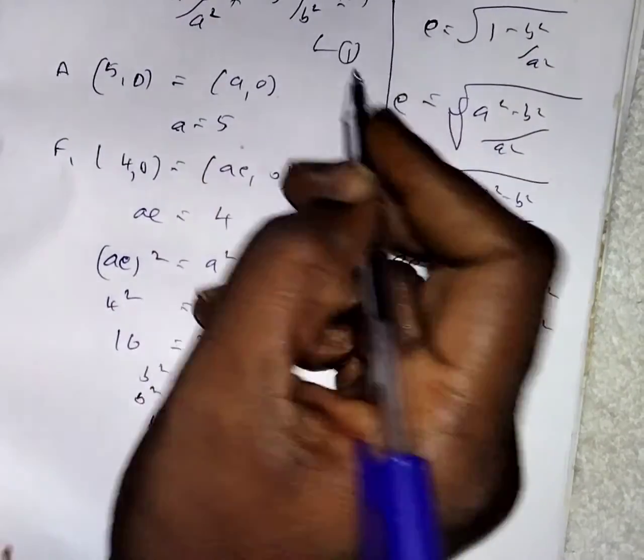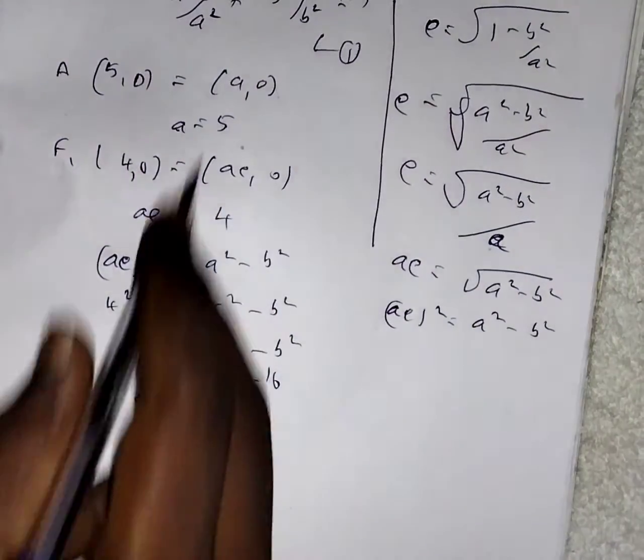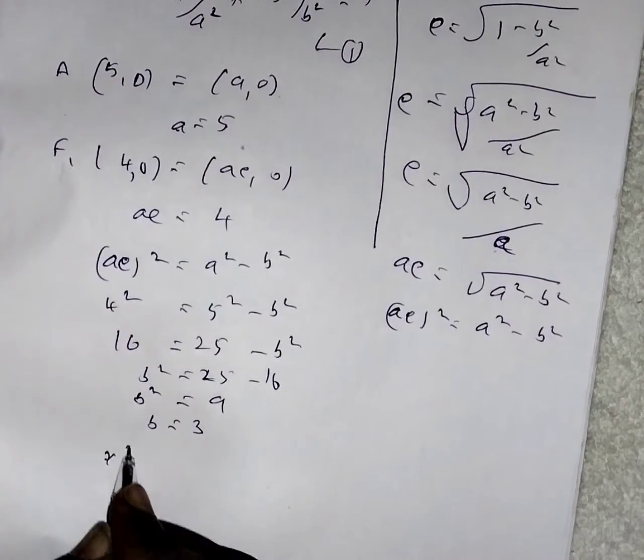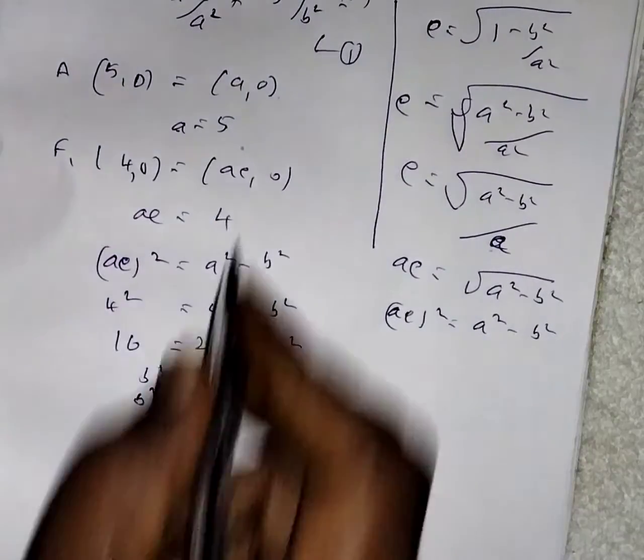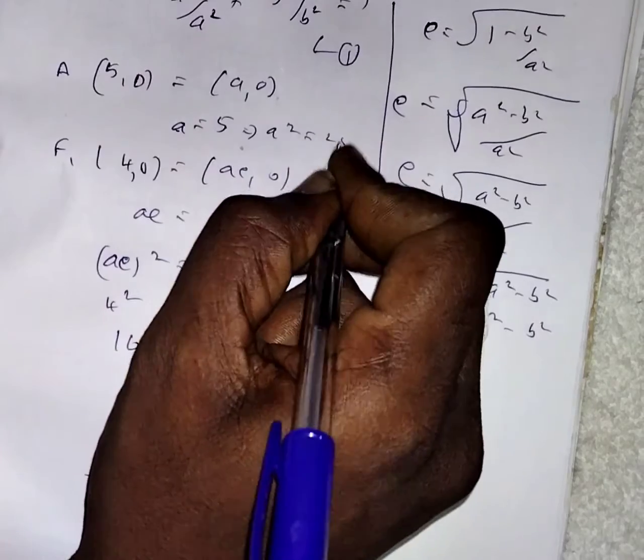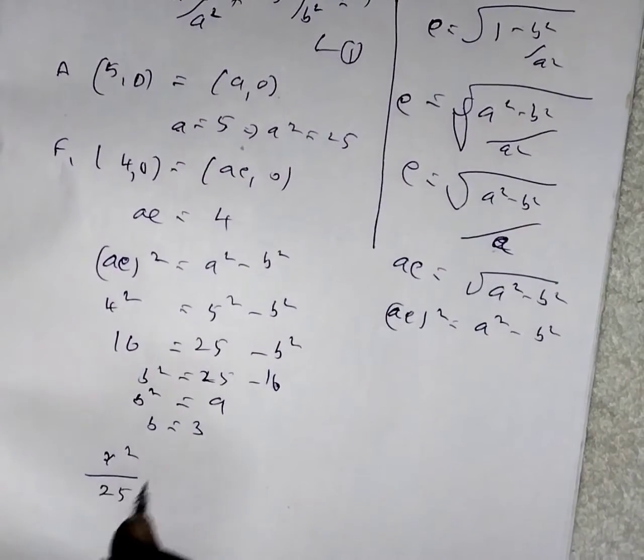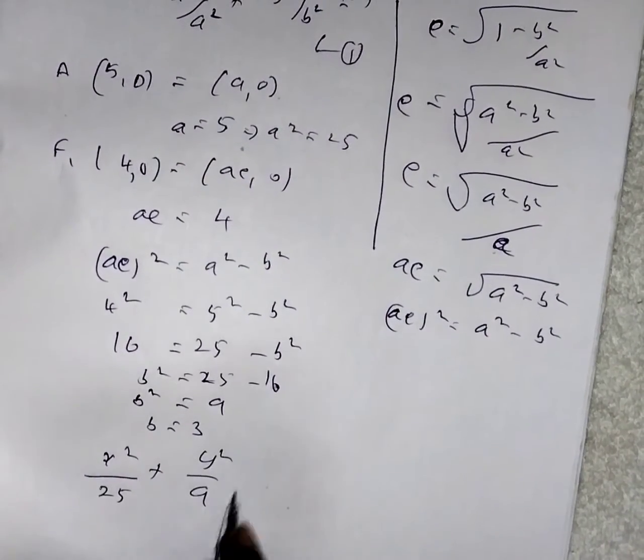Now the equation of the ellipse: from equation 1, substitute A squared and B squared values. X squared by A squared value is 25, and B squared value is 9, equals 1.